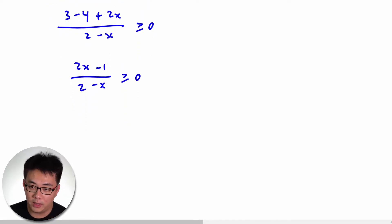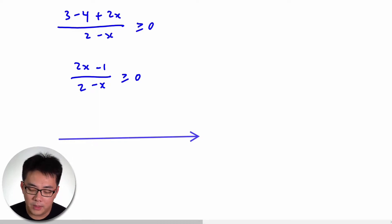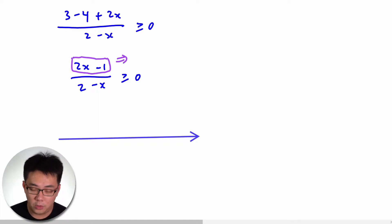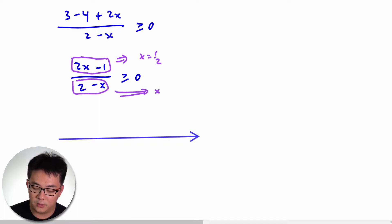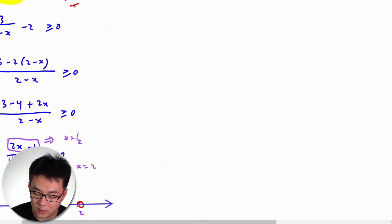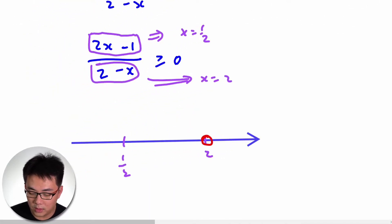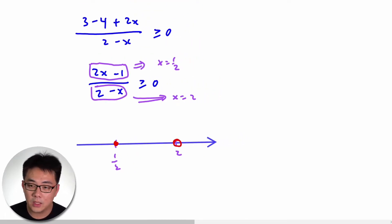Now, how do you solve this inequality? I'm going to use something called the test point method. What you need to do is list the roots from the numerator and the denominator. From the numerator, x equals 1/2, and from the denominator, x equals 2. Take note that you cannot equate x to 2 because of the original constraint, but x can equal 1/2 from the numerator.